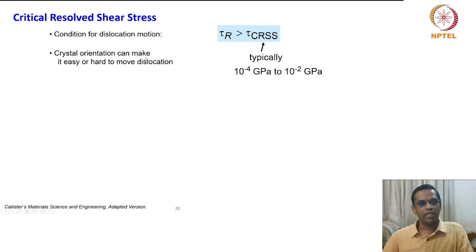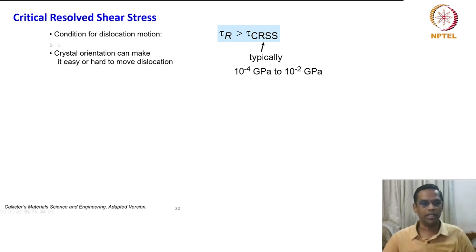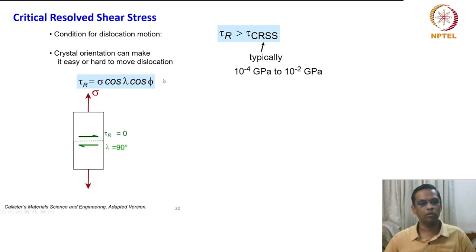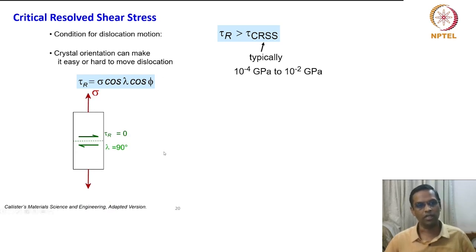Crystal orientation can make it easy or hard to move a dislocation. Since tau_r equals sigma cos lambda cos phi, orientation is very important. We will show this with schematics to explicitly arrive at the condition for slip.